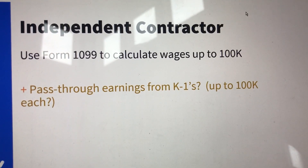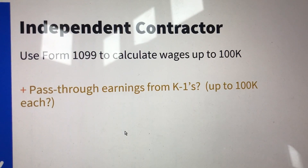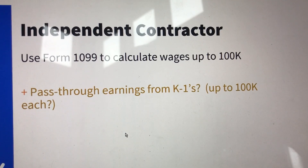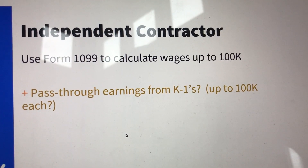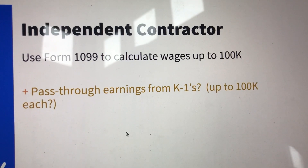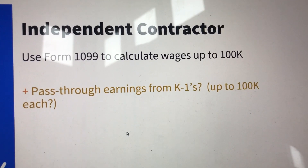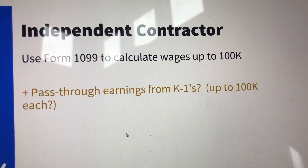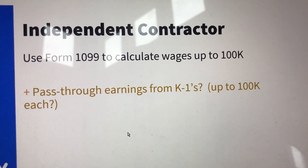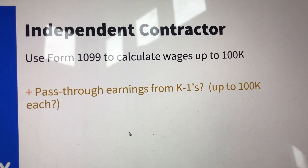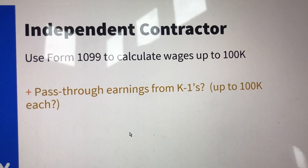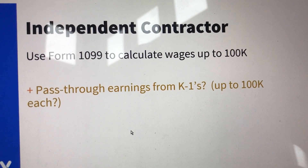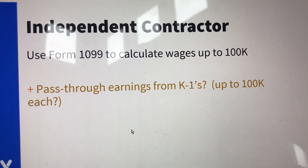If you're an independent contractor and you haven't filed your taxes, then you can use your income up to $100,000 for your wages and average that over 12 months. If you have filed, then you would have your Schedule SE on your 1040 SE form attached to your income tax return as filed. If you also have 1099 income as well as pass-through earnings, the question is whether you can apply up to $100,000 for each of those types of self-employment income.